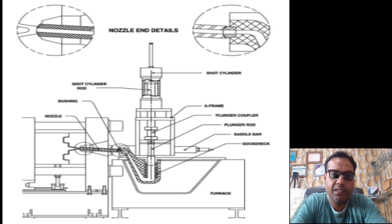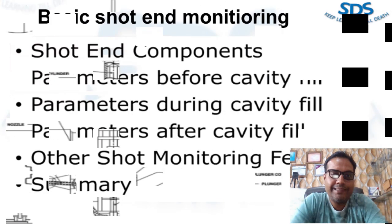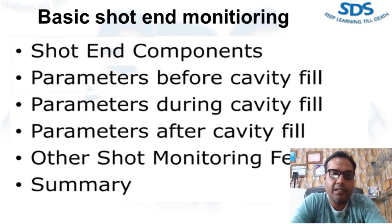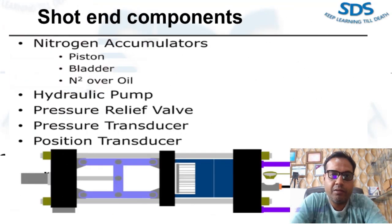There are three critical components to the short end: the accumulator, the hydraulic short cylinder, and the metal chamber, sometimes we call it short sleeve. So the accumulators are typically nitrogen over hydraulic fluid pressure devices.